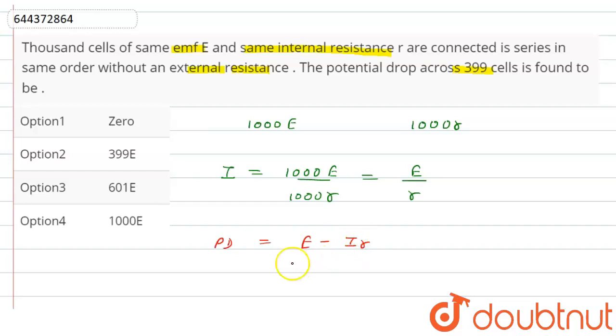So E minus, value of I is E by r into r.